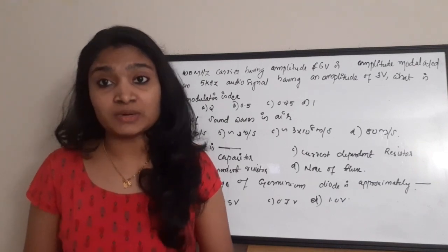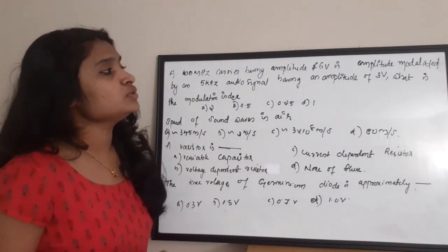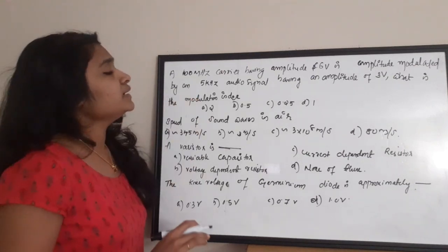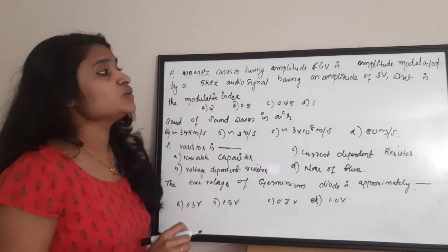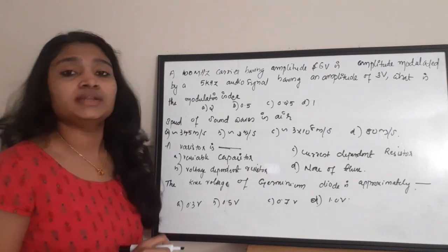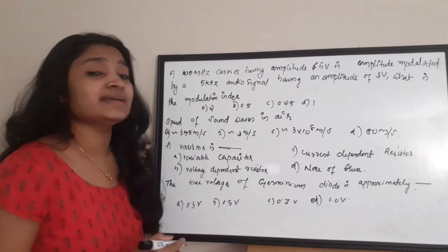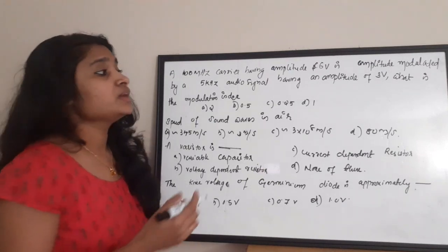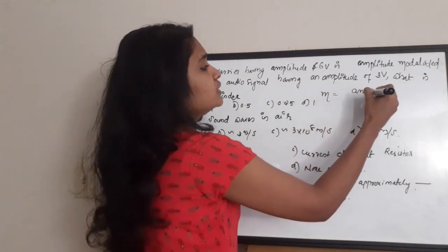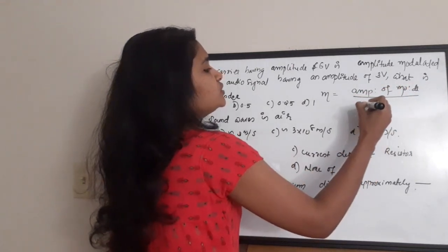The first question: a 100 MHz carrier having an amplitude of 6 volts is amplitude modulated by a 5 kHz audio signal having an amplitude of 3 volts. What is the modulation index? In AM, the modulation index M equals the amplitude of the modulating signal divided by the amplitude of the carrier.